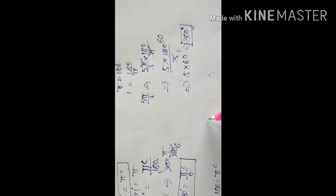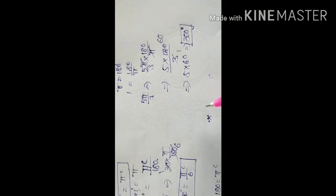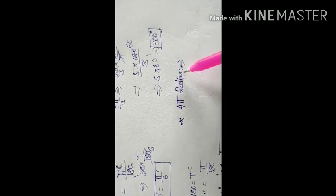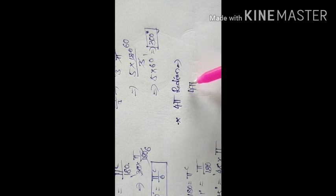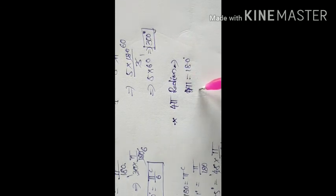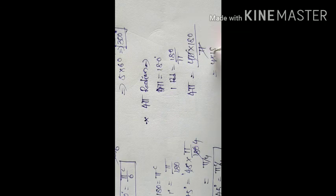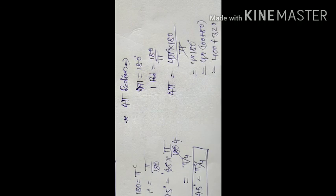Let's take one more example: 4π radians equals 720 degrees.